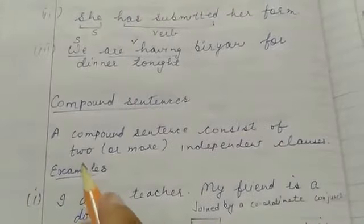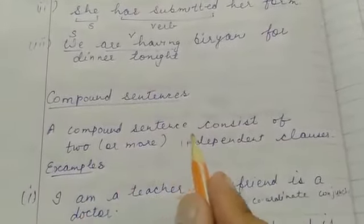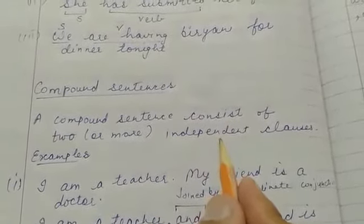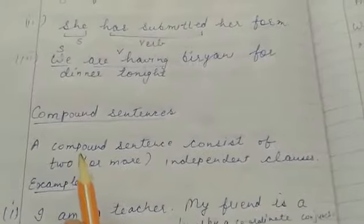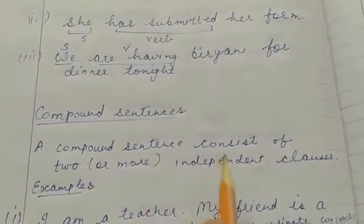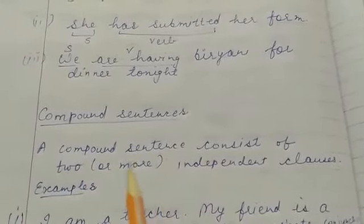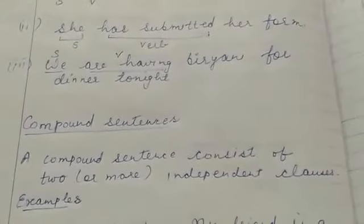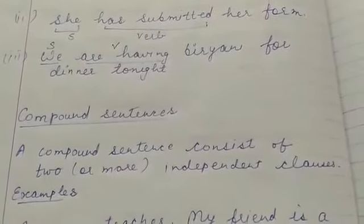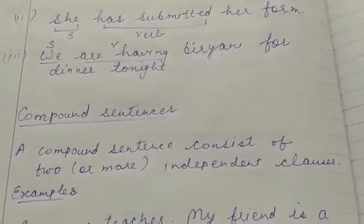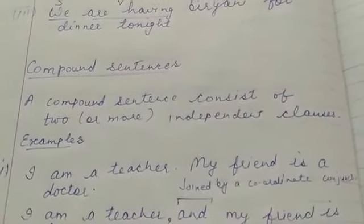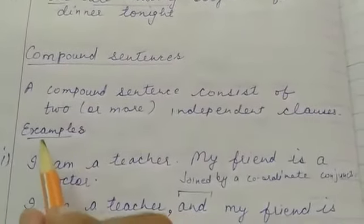A compound sentence consists of two or more independent clauses. We can also say a compound sentence consists of two or more simple sentences which are joined by coordinating conjunctions. At the end of the lecture I will tell you what the coordinating conjunctions are.